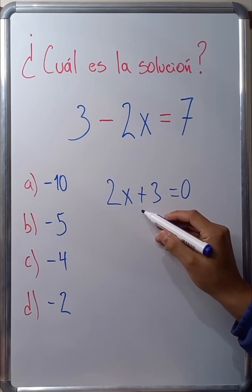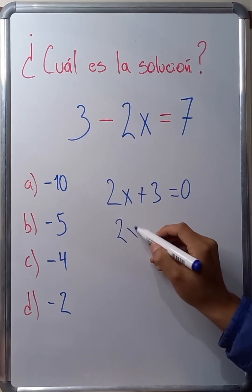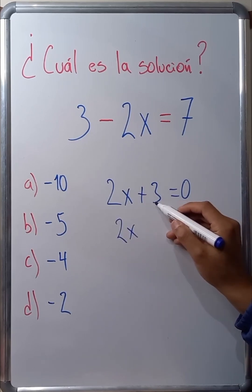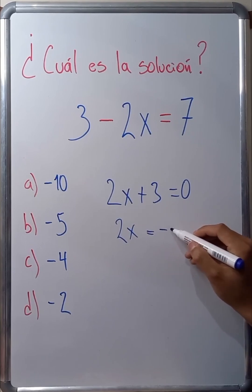I have to get rid of the independent terms and transfer them to the other side of the equation. In this case, it will be 2x. Since the 3 is positive, it will be transferred to the other side of the equation with the opposite sign. This will be negative 3, and we must also know the following.